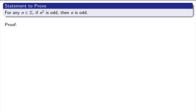Here's our next statement to prove. For any n in the integers, if n squared is odd, then n is odd.